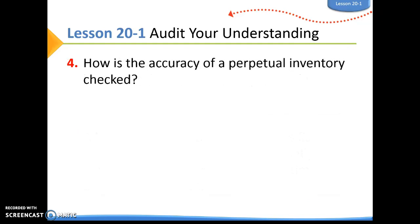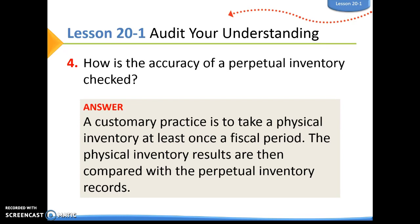Question four: how is the accuracy of a perpetual inventory checked? With a perpetual inventory, they check to make sure their books are right. A customary practice is to take a physical inventory at least once a fiscal period. The physical inventory results are then compared to the perpetual inventory records to make sure they are on the same page. You can now watch the 20-1 work together video.